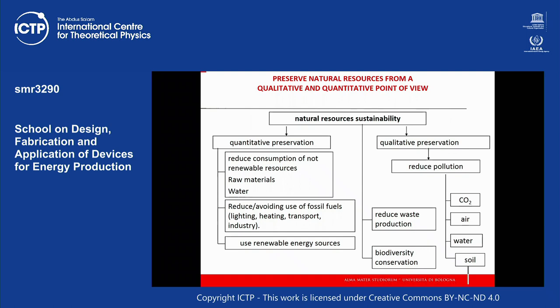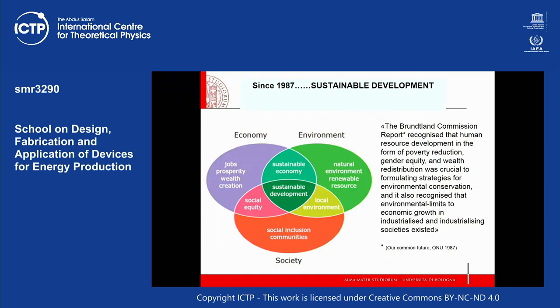We need to move towards renewable resource consumption — for energy supply and also as raw materials. We must consider the water cycle in any kind of activity to reduce total water consumption. By qualitative preservation, we should use renewable resources for energy production, avoiding fossil fuels in the near future. Reducing waste production, water consumption, and pollution in the air, water, and soil, and preserving biodiversity are all necessary — nothing new, I am sure.